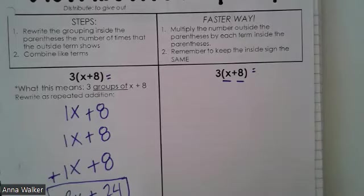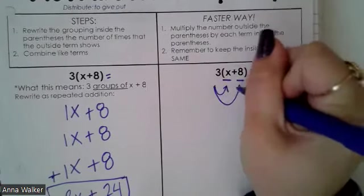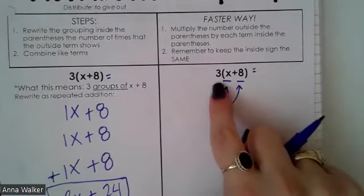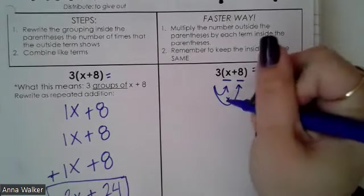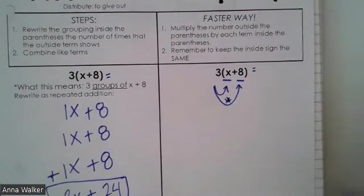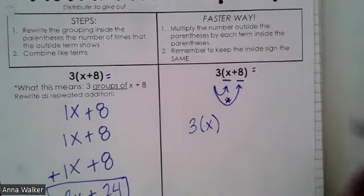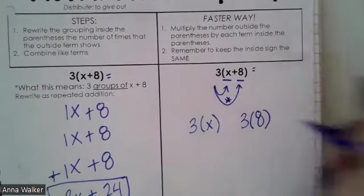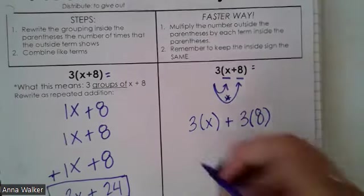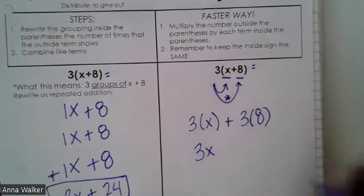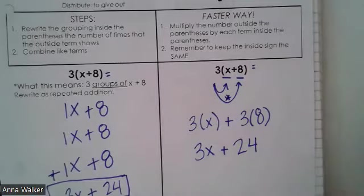So one way that I like to visualize the distributive property is I like to draw an arrow from the 3 to the x and the 3 to the 8, or from the outside term to the first term, from the outside term to the second term. And just to remind myself to multiply, so I just kind of use the asterisk to mean multiplication. So if I multiply 3 times each of these terms, I'm going to multiply 3 times x. And then I'm also going to multiply 3 times 8. And I'm going to keep the plus sign in between these two terms. And so now if I simplify these terms, 3x or 3 times x can just be written as 3x and 3 times 8 is 24.